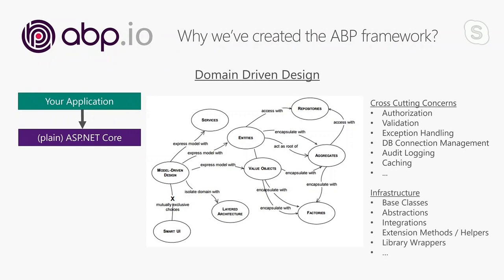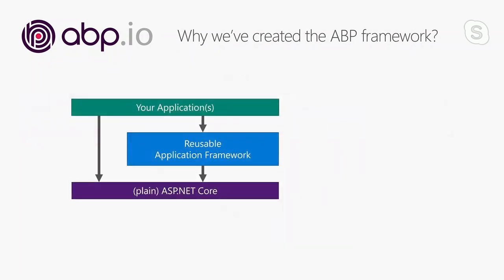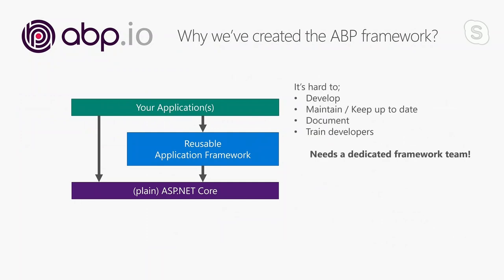You need to create base classes, abstractions, integrations, extension methods, and helper libraries to simplify your application code — dealing with all this infrastructure again and again for every project. For that reason, big enterprises build their own internal application frameworks on top of ASP.NET Core. But it's hard to build, maintain, and document — which is why most such efforts finally fail, or no one knows how they work because of missing documentation.